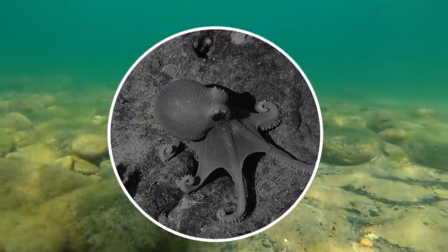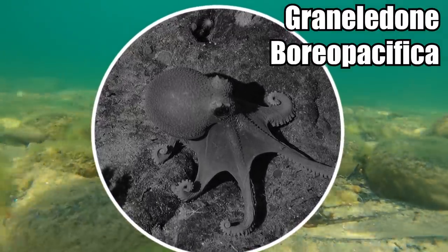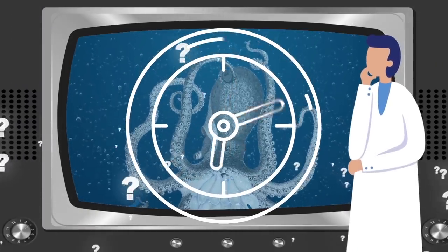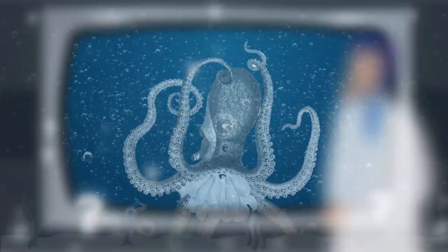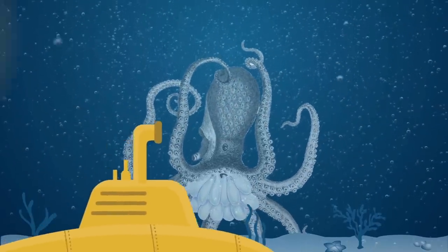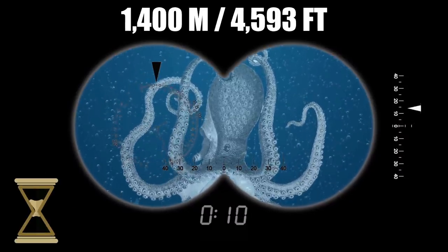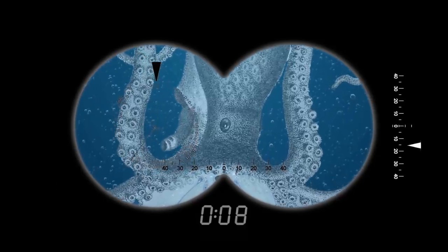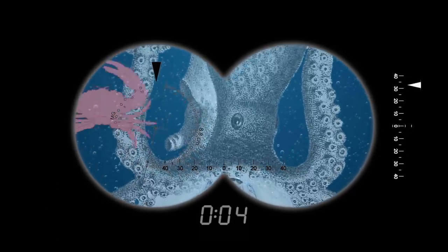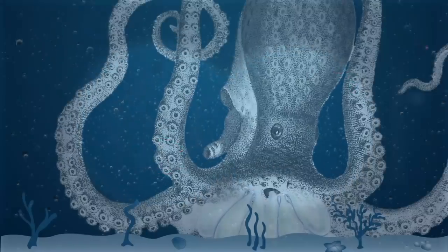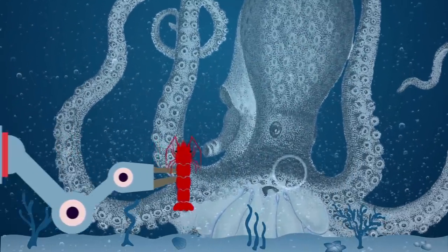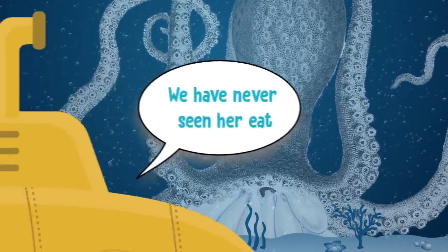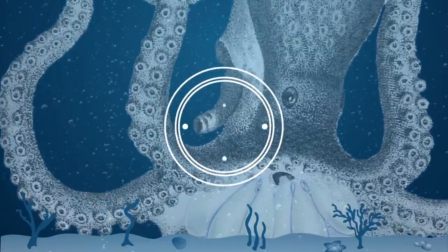The deep-sea octopus known as Graneledone boreopacifica might just be one of the world's best mothers. In April of 2007, an ROV expedition headed by Bruce Robison from the Monterey Bay Aquarium Research Institute spotted a lone female, 1,400 meters below the surface. They returned to the same site 18 times over the next four and a half years, and every time they spotted the mother octopus covering her eggs. She never left and didn't eat for the whole time. As she became a ghost of her former self, her eggs grew bigger. The last time the team saw her was September 2011.